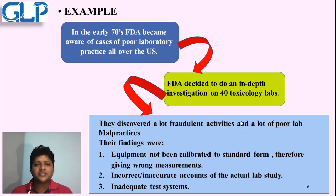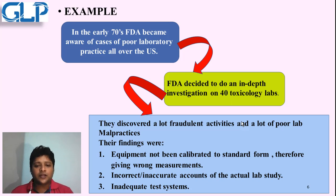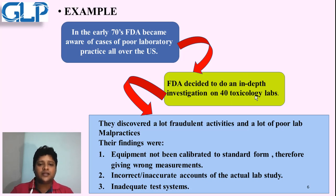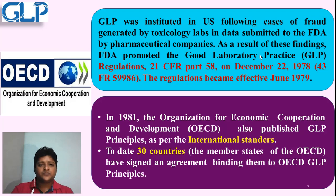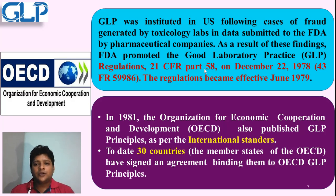The FDA decided to investigate all these toxicological labs. After investigation, they found that equipment used in the laboratories was not calibrated, meaning the data obtained from these laboratories was not correct. There was incorrect lab data, inadequate testing systems — everything was completely fraudulent and data were manipulated. Due to all these reasons, GLP was instituted in the US in 1978 and came into effect in the year 1979.